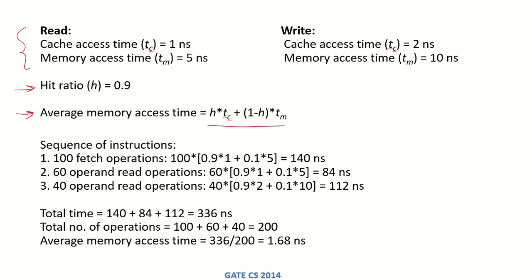Looking at the sequence of instructions, there are 100 fetch operations. Fetch operations are read operations because the instructions are being read from memory. Applying this equation with the values given for read operations: 100 × (0.9 × 1 + 0.1 × 5), which gives a total of 140 nanoseconds.